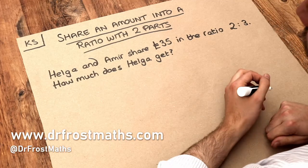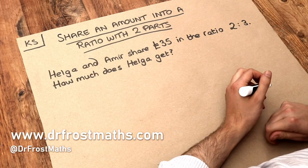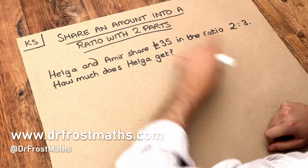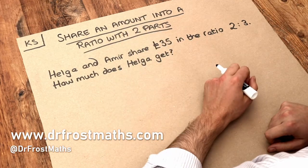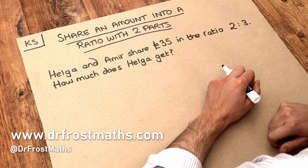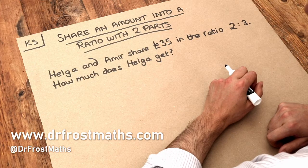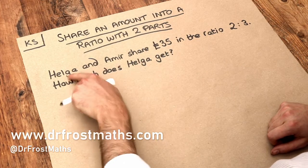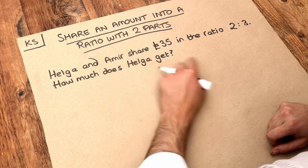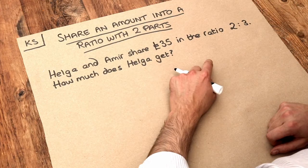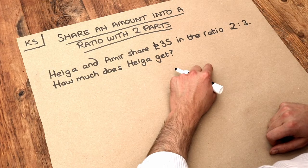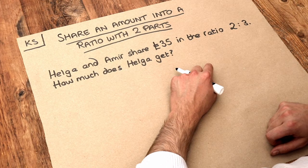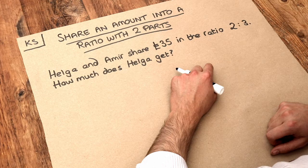Hello and welcome to this Dr. Frostmast's key skill video on sharing an amount into a ratio with two parts. We've got this question here: Helga and Amir share £35 in the ratio 2 to 3. How much does Helga get?